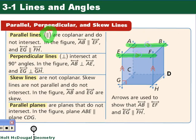Perpendicular lines are lines that intersect at 90-degree angles, and we can denote those using an upside-down T symbol. Starting with line AB again, line AB and line AE are perpendicular. We can see the right angles formed by the square notation in the corner. Skew lines are lines that are not coplanar, not parallel, and don't intersect.